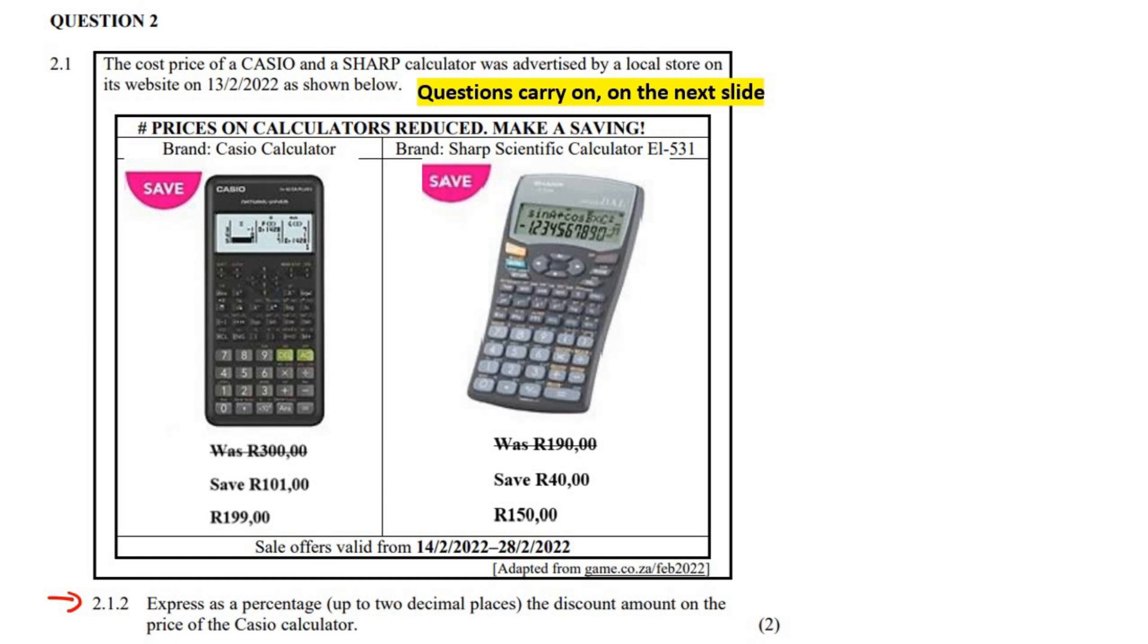This question says express as a percentage up to two decimal places the discount amount on the Casio. So the discount is, like, how much are they decreasing the price by? They're decreasing it by 101 rand, and what was the original? 300.